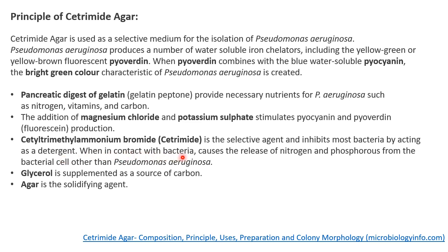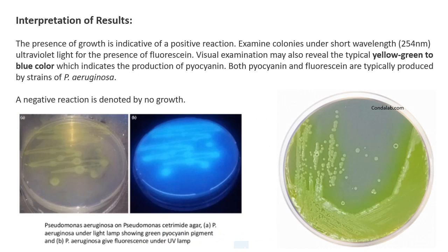Cetrimide is the selective agent — it inhibits most bacteria by acting as a detergent. When it comes in contact with bacteria other than Pseudomonas aeruginosa, it causes the release of nitrogen and phosphorus from the bacterial cell. Cetrimide does not affect Pseudomonas aeruginosa or its cell wall. Glycerol is supplemented as a source of carbon, and agar is the solidifying agent.